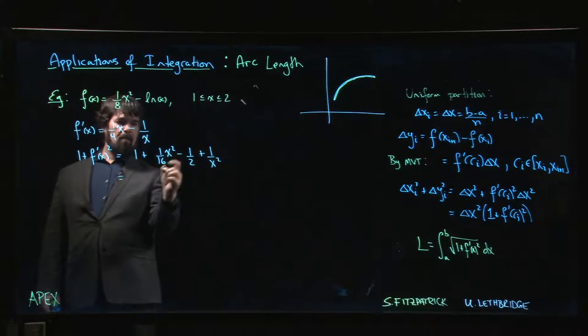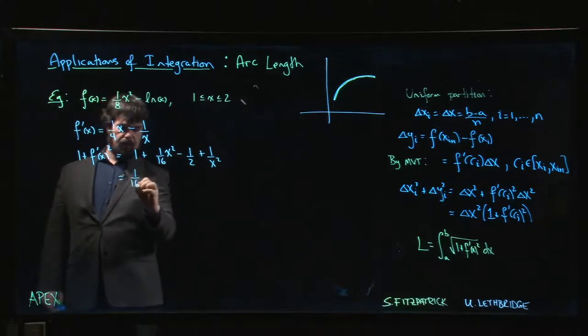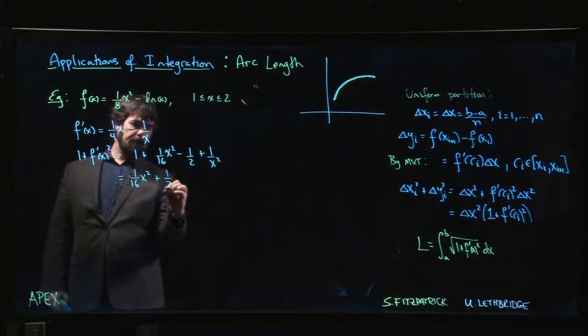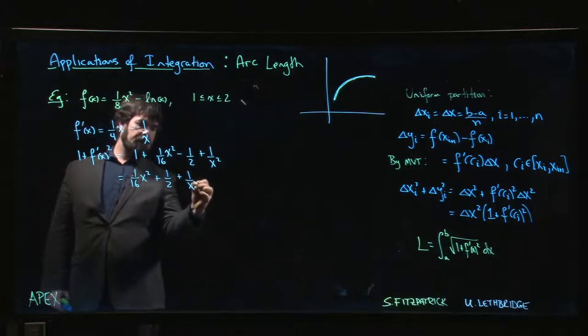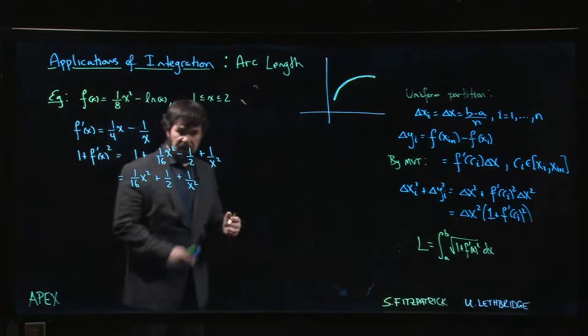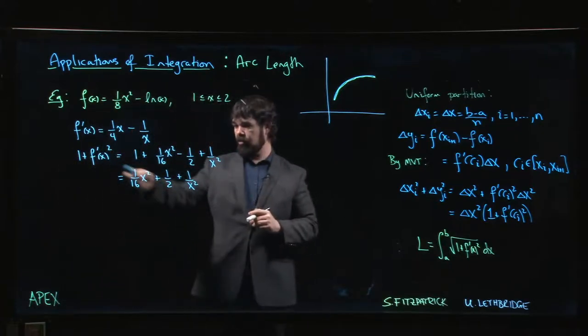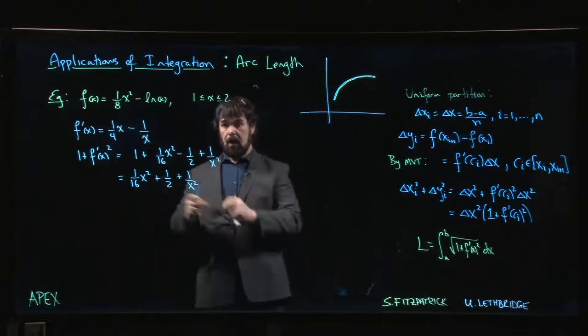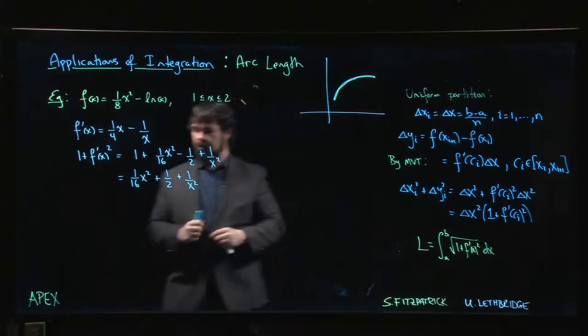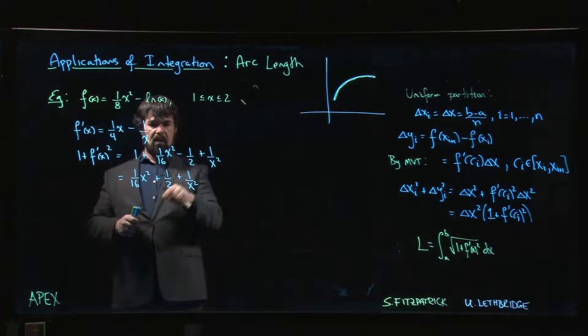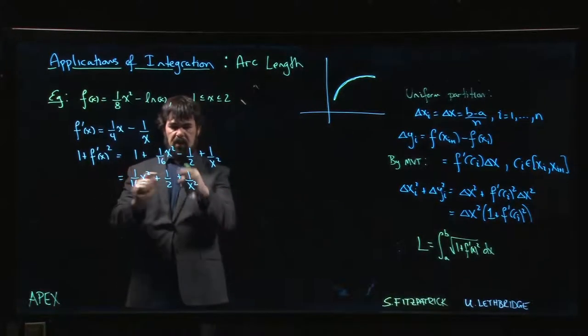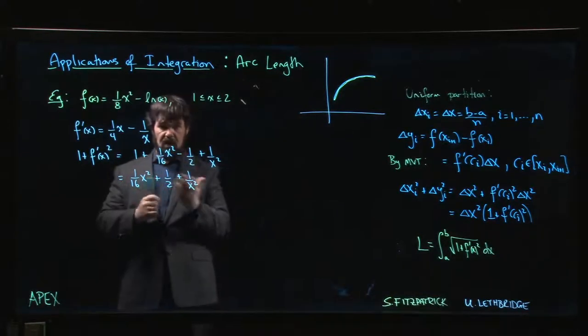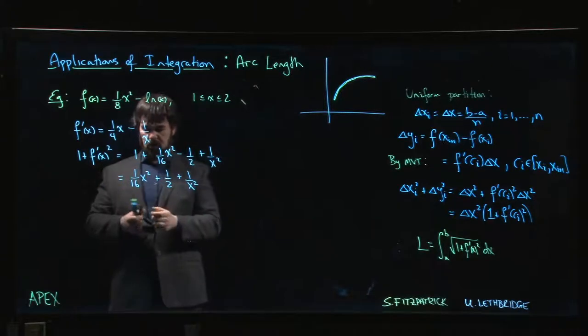And now you can kind of see what we've done here. 1 - 1/2 gives us plus a half, and things have been carefully chosen to make sure that actually once you do this calculation, 1 + f'^2, the thing you end up with is a perfect square. Because the only difference between this square that we started with and this one is plus instead of minus, which is what happens if you change this minus to a plus.